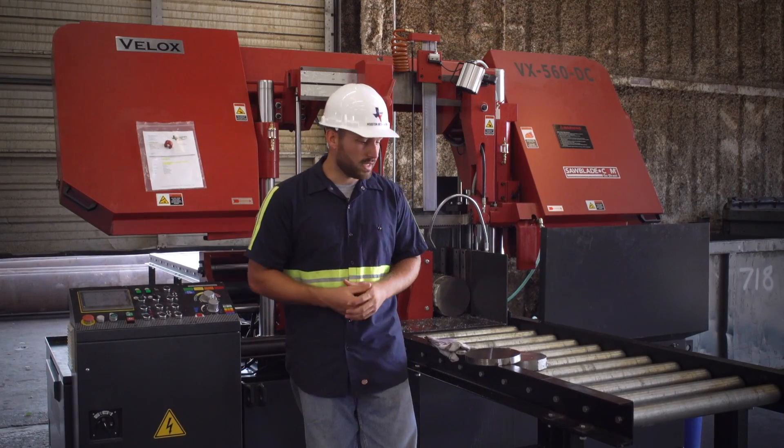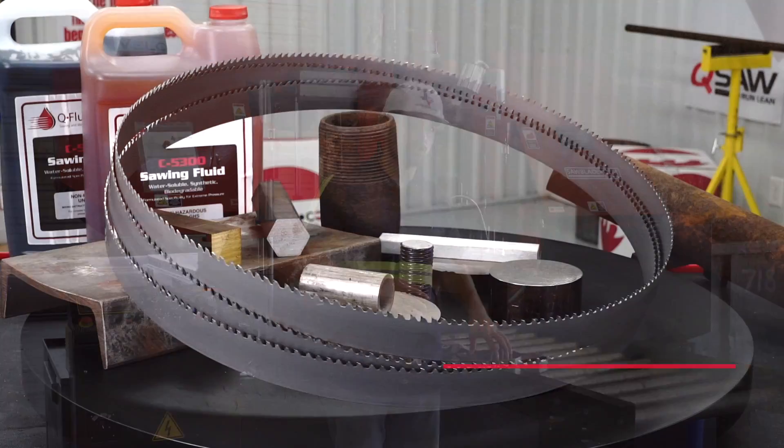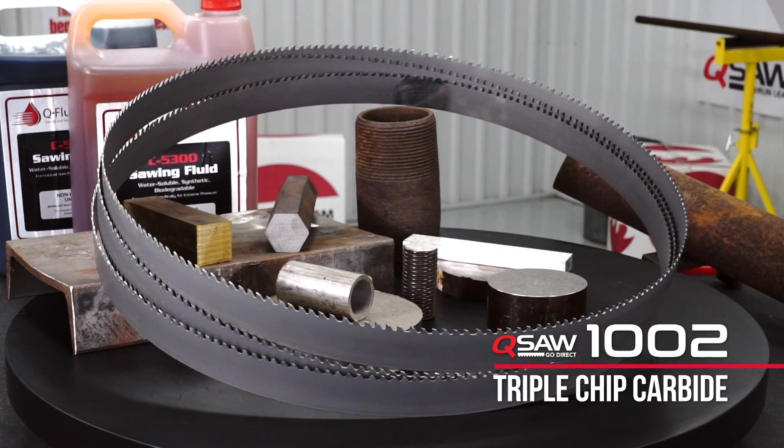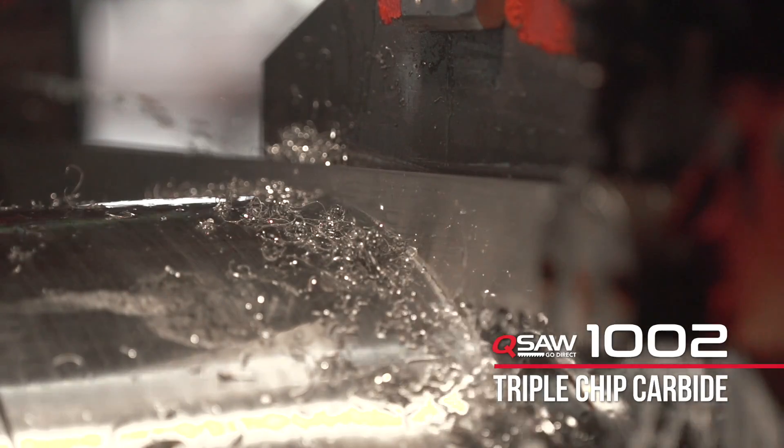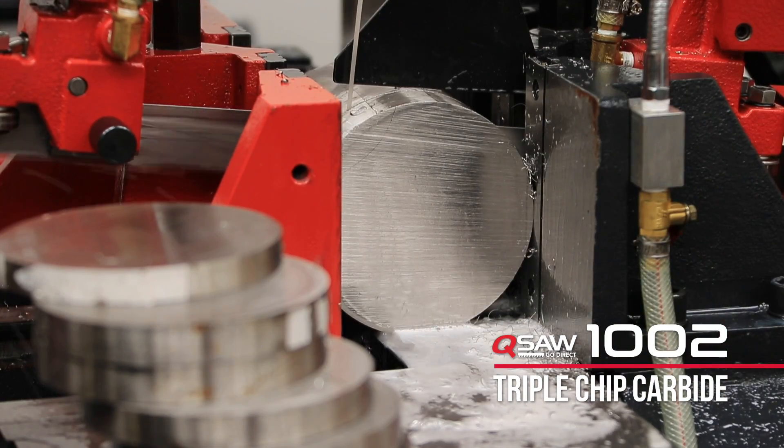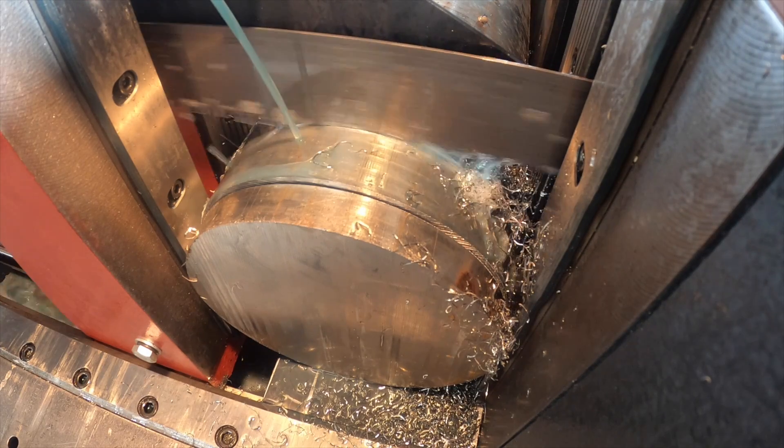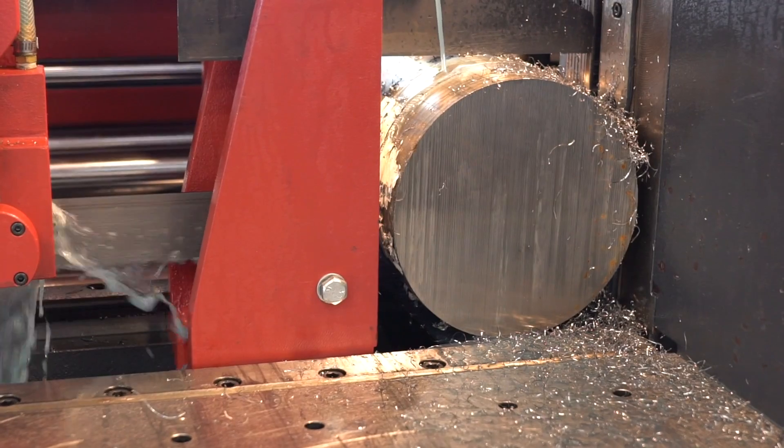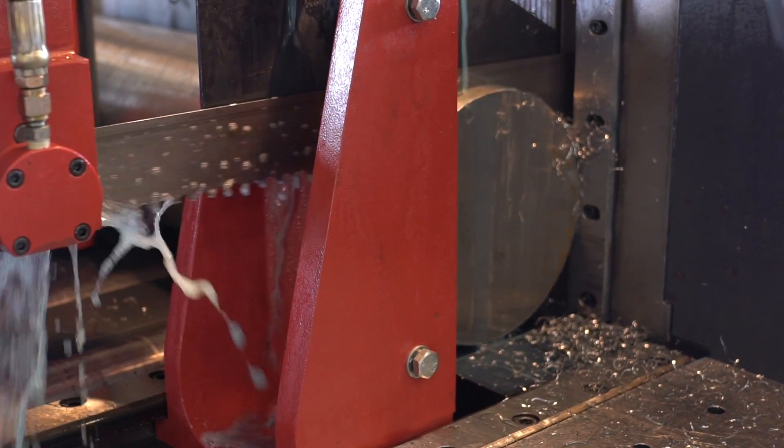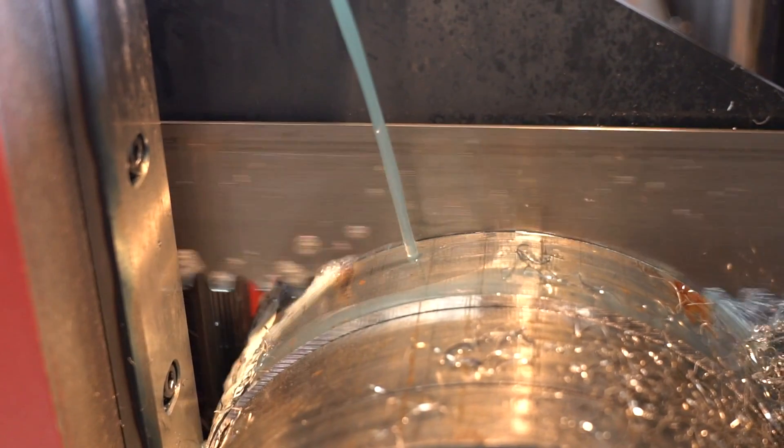To aid us in this cutting process we're going to be using sawblade.com's Q1002 triple chip carbide blade. The Q1002 from sawblade.com is specifically engineered to cut exotic high tensile strength alloys such as this Monel 400. It's got a precision triple chip ground carbide tooth that's going to be able to keep an accurate cut with minimal blade deflection and a great overall blade life.